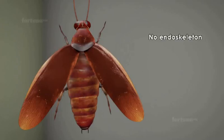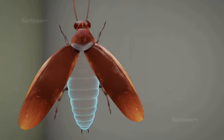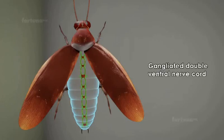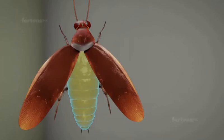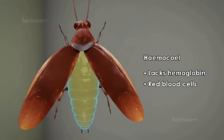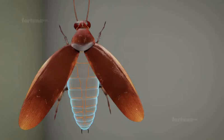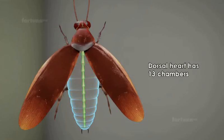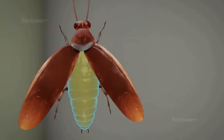There is no endoskeleton. The cockroach has a gangliated double ventral nerve cord. Its body cavity is known as the hemocell, and it lacks hemoglobin and red blood cells. The respiratory organs are its trachea. Its dorsal heart has 13 chambers, and the blood flows into body cavities, meaning it is an open circulatory system.